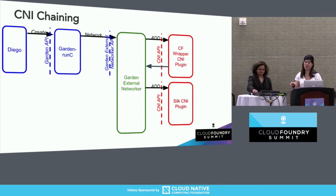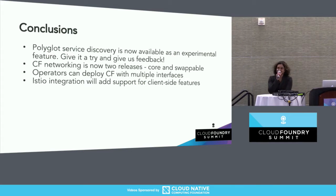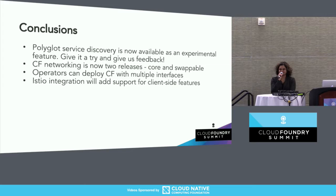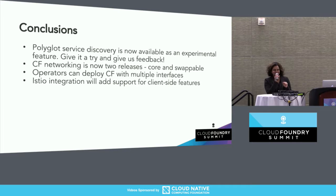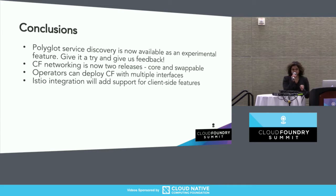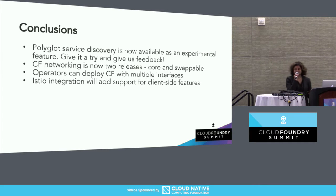Those are just a couple of the additional things we've been working on beyond just polyglot service discovery. Thanks Angela. Just a quick recap: we do have polyglot service discovery out there and we're really looking for feedback — give it a try and let us know what you think. It is running on PWS right now and it looks great so far, and we'll be promoting this to generally available once we see it running for some time. We also spoke about splitting CF networking release into core and swappable parts — we'll be cutting CF networking release 2.0 pretty soon to make clear that some manifest properties are no longer going to be present. We also added support for multiple interfaces, and there's a lot of exciting stuff to look forward to as we start adding more advanced client-side features to polyglot service discovery.